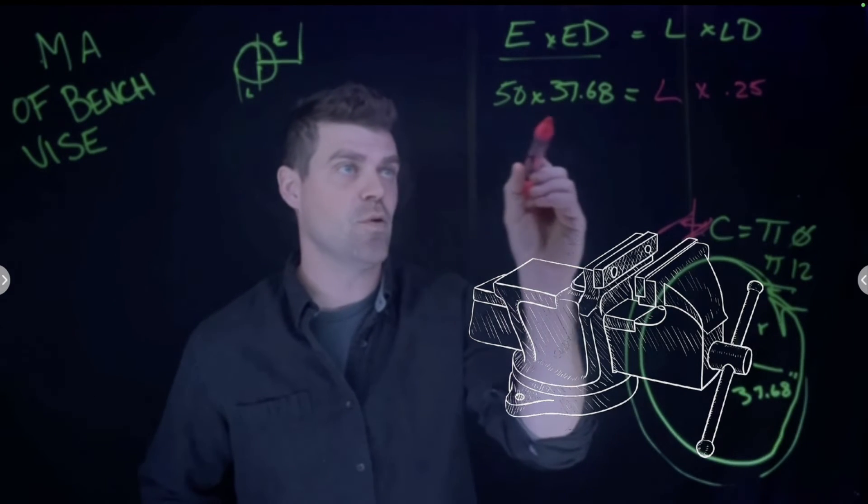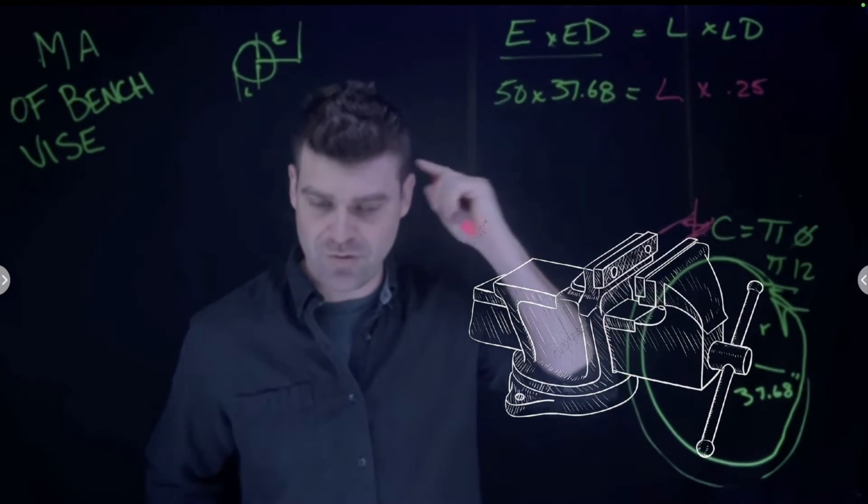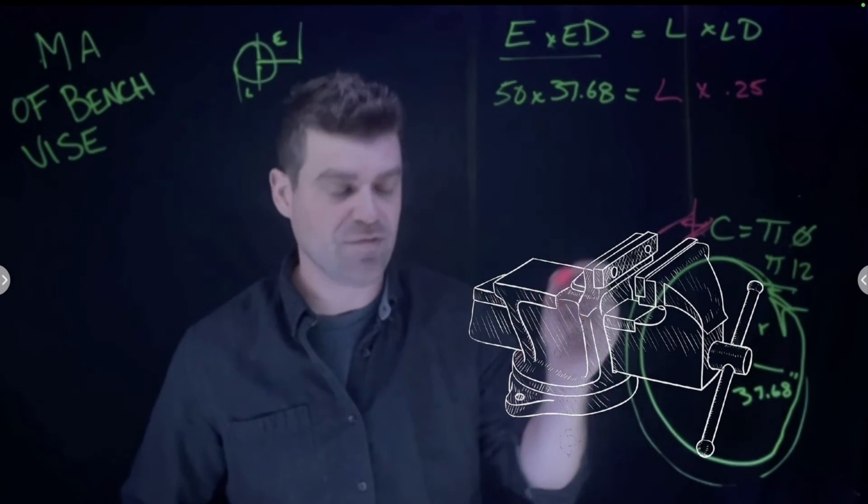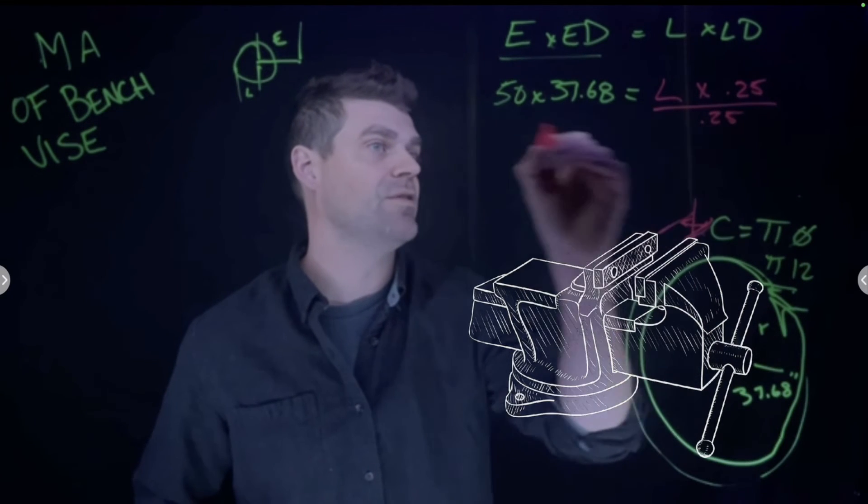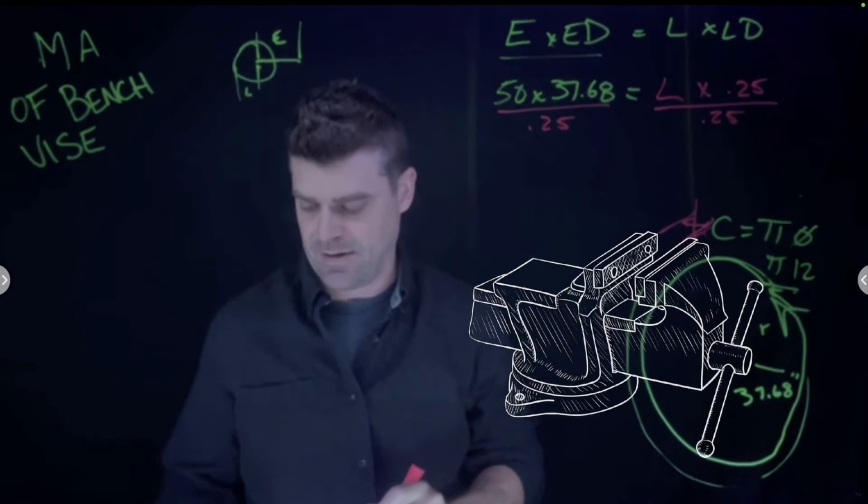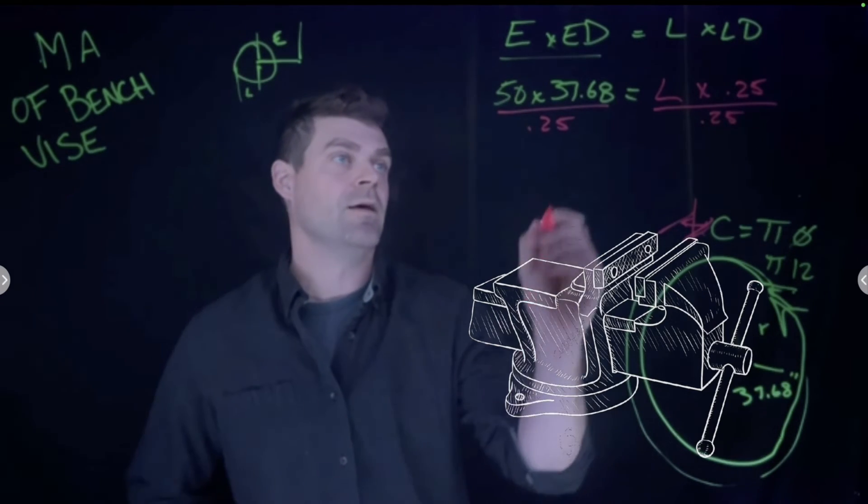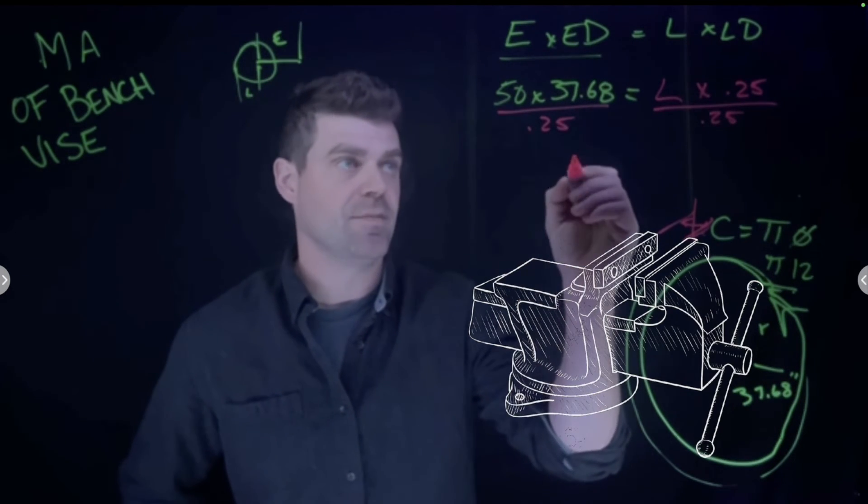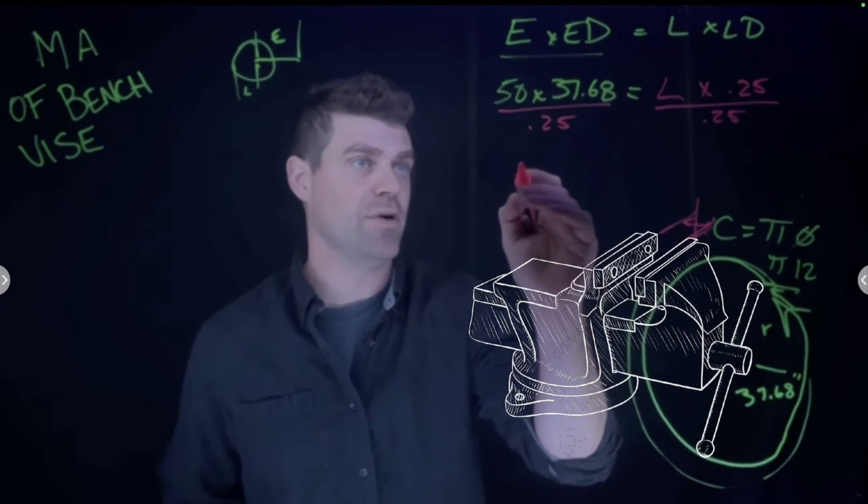If we use 50 pounds of force on a 12-inch handle all the way around, and the screw moves 0.25 inches, we'll divide both sides by 0.25. Let me grab my calculator. When I plug this in, I go 50 times 37.68 and divide it by 0.25.